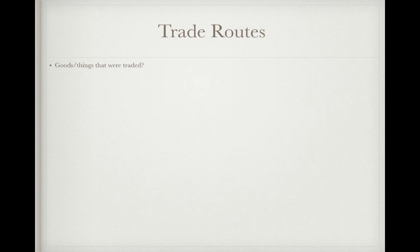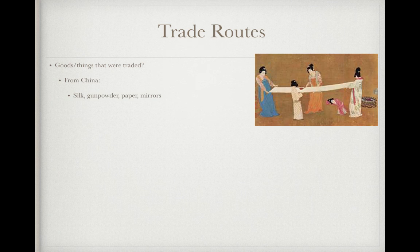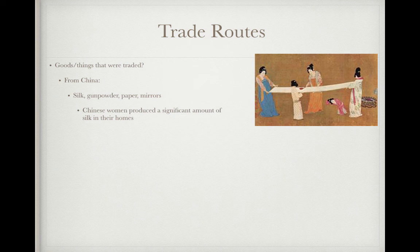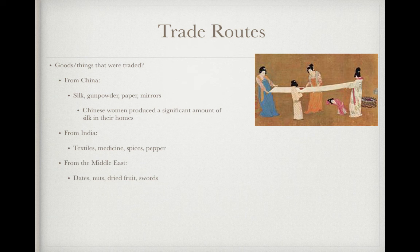So what were some goods that were traded? From China, you have silk, gunpowder, paper, and mirrors. Chinese women produced a significant amount of silk in their homes — they really were the makers of silk early on. From India, you have textiles, medicine, spices, and pepper. And from the Middle East, you have dates, nuts, dried fruit, and swords.